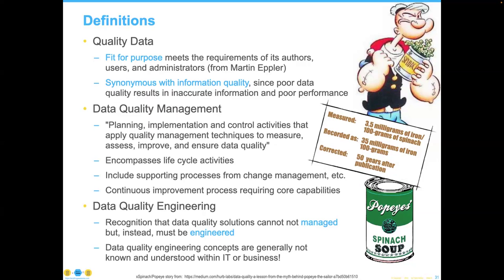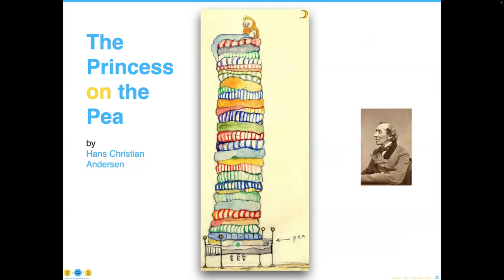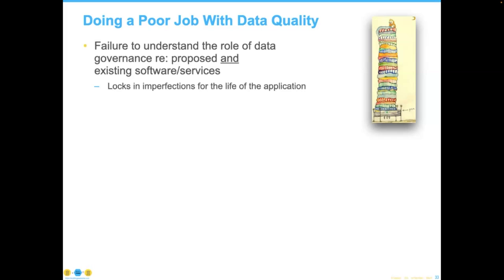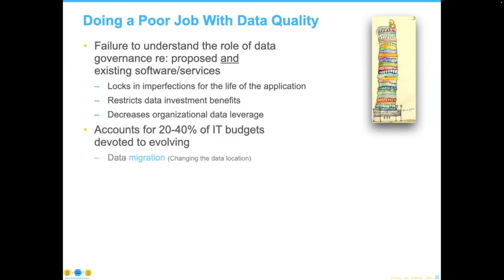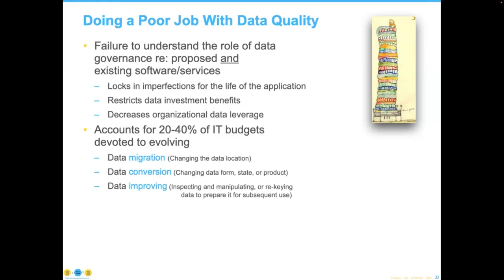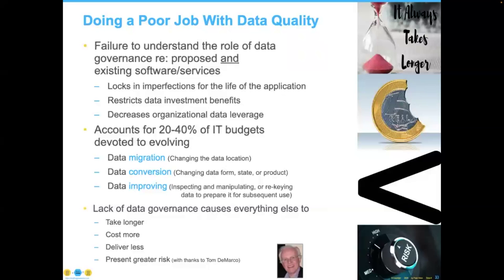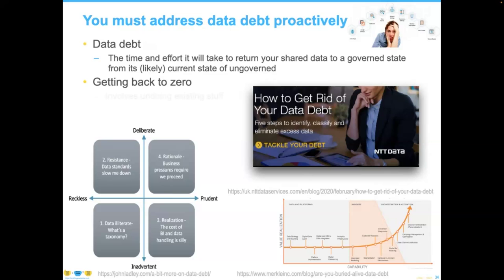We have lots of these challenges that have caused problems throughout history and are relatively unknown. I analogize it to the princess on the pea from Hans Christian Anderson — the pea down at the bottom being a data quality problem causing sleeplessness for the princess forever. Doing a bad job of data quality locks in imperfections for the life of the application, restricts future data investment benefits, and decreases organizational data leverage — accounting for 20 to 40 percent of all IT budgets being devoted to migration, conversion, and improvements in this area.